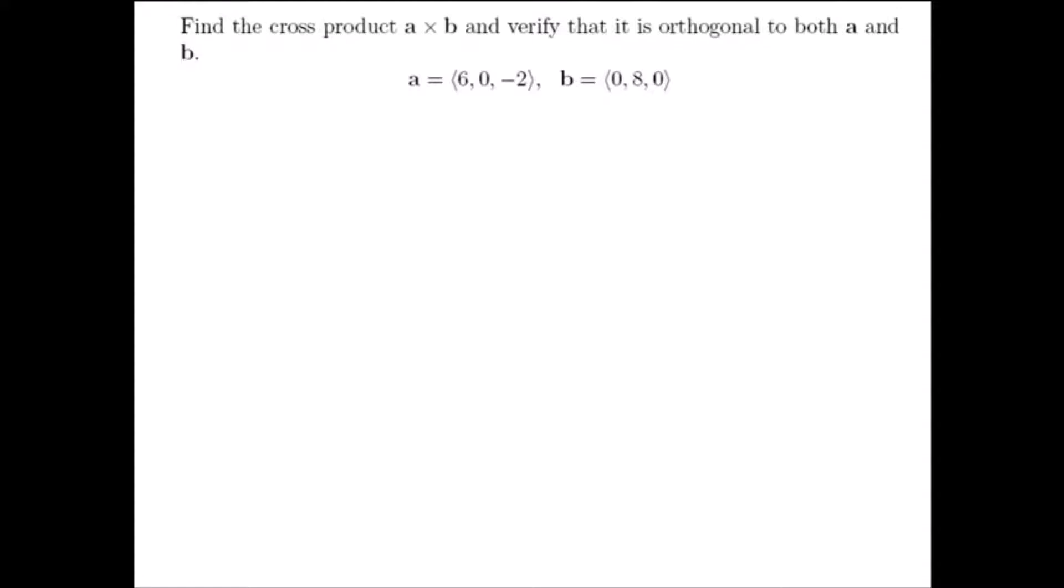Find the cross product A cross B and verify that it is orthogonal to both A and B. Our two vectors here are 6, 0, negative 2, that's the vector A, and B is 0, 8, 0.